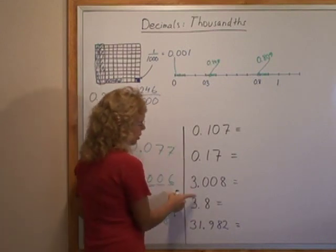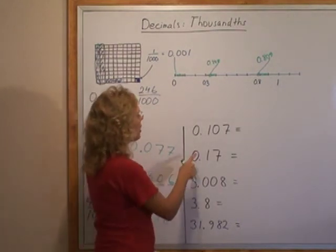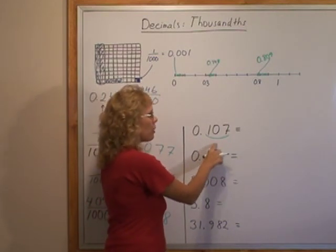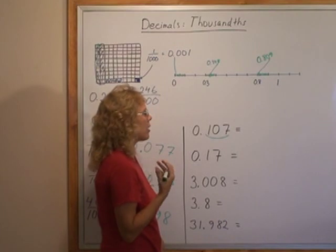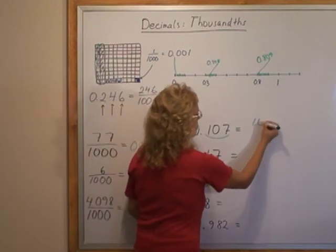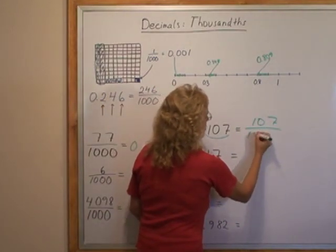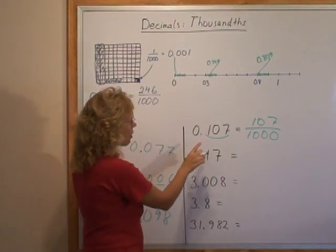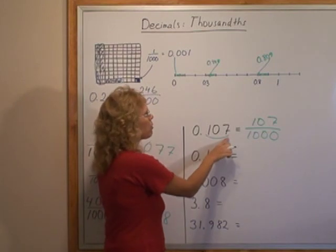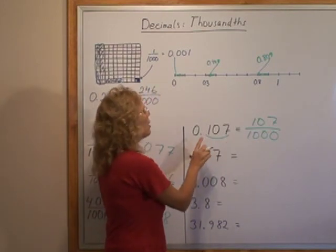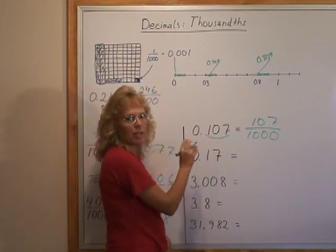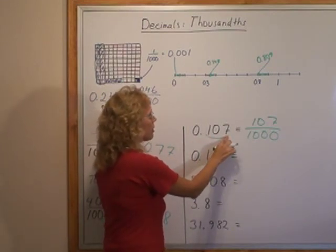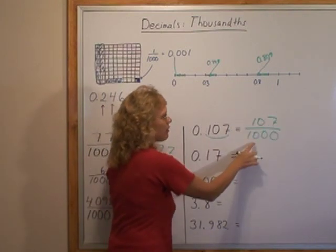Now to change this to fractions or mixed numbers. Here I can read these three decimals as a single number of 107 and then they are thousandths. And technically though, this would be one-tenth and this would be seven-thousandths. But the one-tenth is at the same time hundred-thousandths. So that's why this becomes hundred-thousandths and seven-thousandths together, one-hundred-and-seven-thousandths.